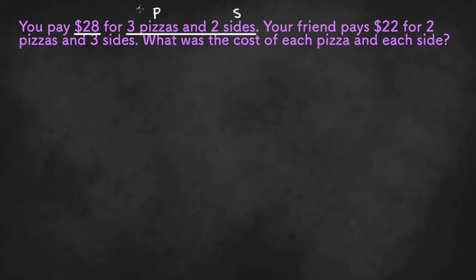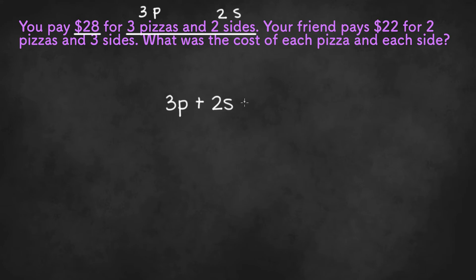So we have three pizzas, that would be 3p, and two sides, which is 2s. Putting this all together, we get 3p plus 2s equals 28.